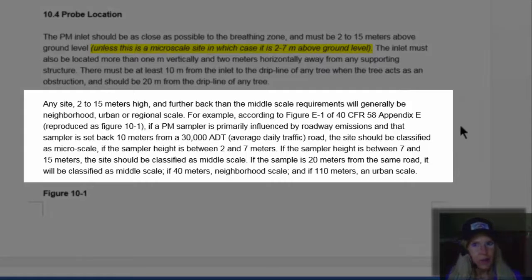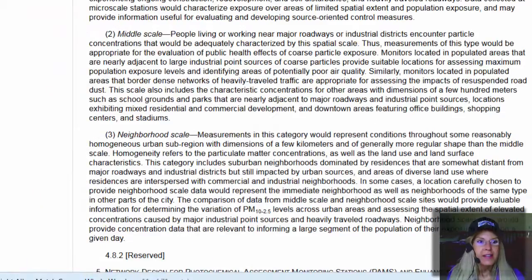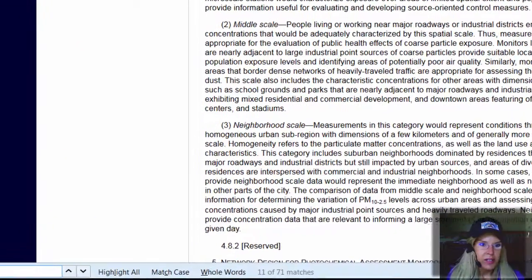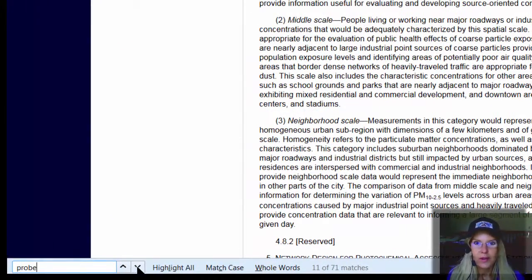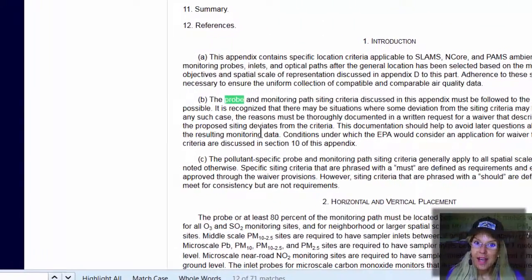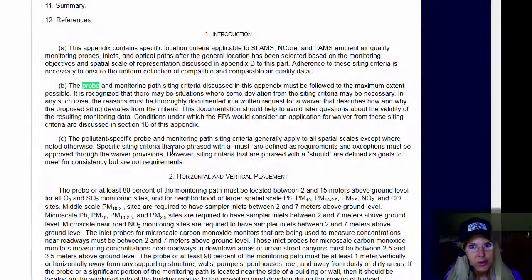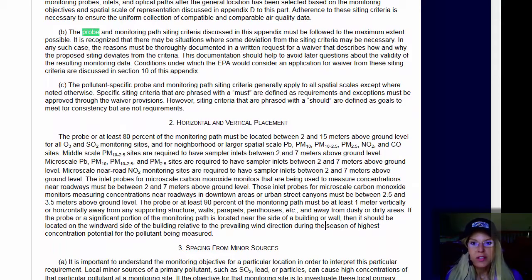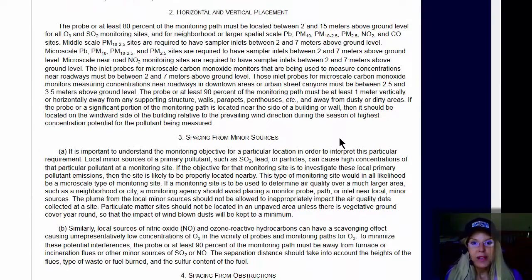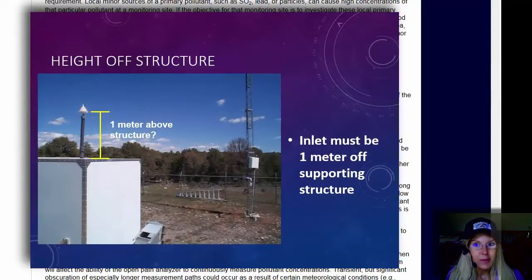And based upon this example QAPP section, I see that it's in Appendix E. So I'm going to go back to eCFR and then down here in the search box I'm going to type in probe because I know that's what I'm trying to look for. And I find it and it has the definitions of what the probe and monitoring path sighting criteria are. It talks about this horizontal and vertical placement, spacing from minor sources, especially for some pollutants, spacing from obstructions.